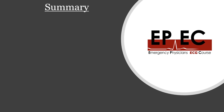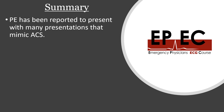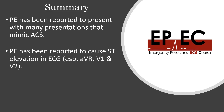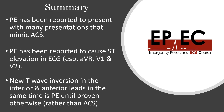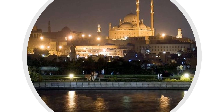To summarize the key points: PE has been reported to present similarly to acute coronary syndrome. PE can cause ST elevation in the ECG, especially in AVR, V1, and V2. Most importantly, be careful — simultaneous new T wave inversions in the inferior and anterior leads should be considered PE until proven otherwise. Links to the references will be in the show notes of the video. I hope you find this useful and I'll talk to you very soon.